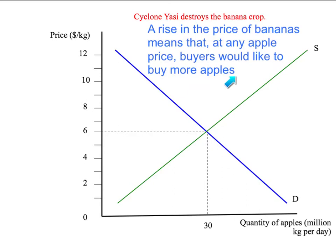Or, in other words, in terms of our diagram, the demand curve for apples is going to shift to the right. At any price, buyers will want to buy more apples than when the price of bananas was low.